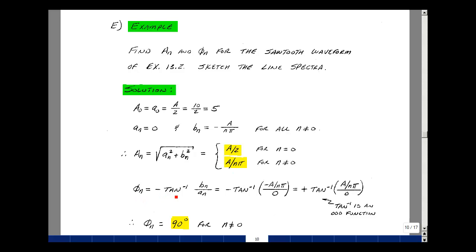Our value for φ_n is minus the arctangent of b_n over a_n, equal to minus a over nπ divided by 0. Tangent is an odd function, so this minus sign can come out in front and cancel. We then have the arctangent of a divided by nπ divided by 0, which equals plus 90 degrees for all n not equal to 0.